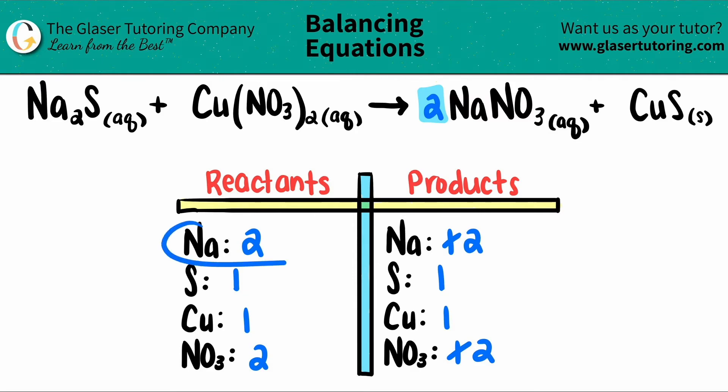And all of them are balanced. I have 2 sodiums, 1 sulfur, 1 copper, and 2 nitrates on both sides. So my balanced equation is 1 Na2S plus 1 Cu(NO3)2, which will produce 2 NaNO3 and 1 CuS. And that's it.